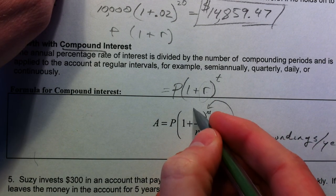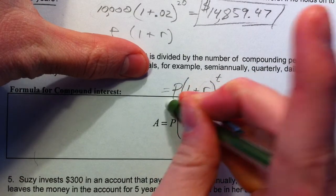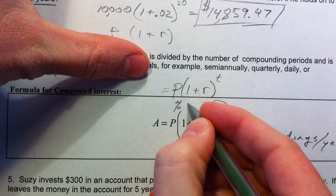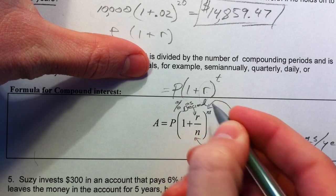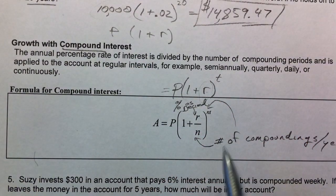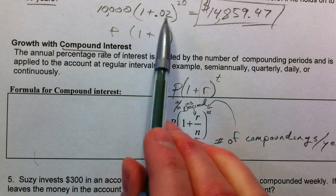That interest rate, percent, it's a percent as a decimal just again. So you're going to move that decimal on the percent twice, just like we've been doing. The 2% became the 0.02.